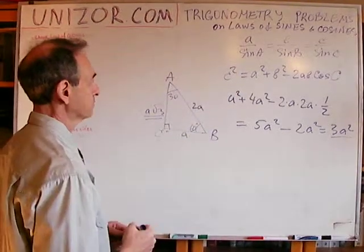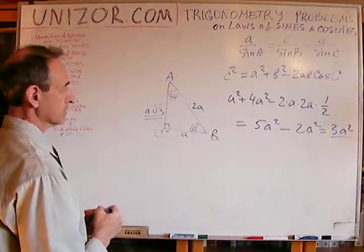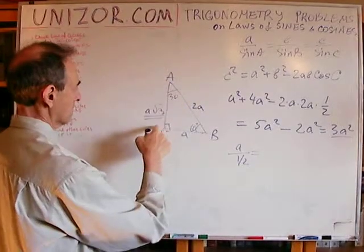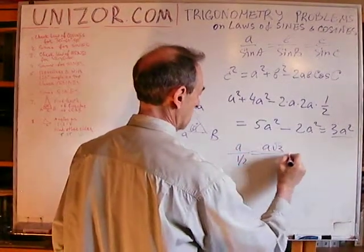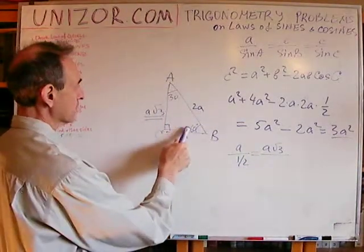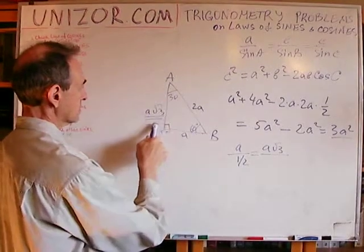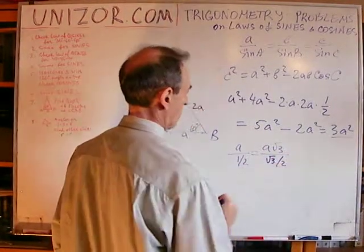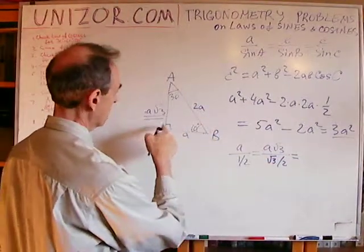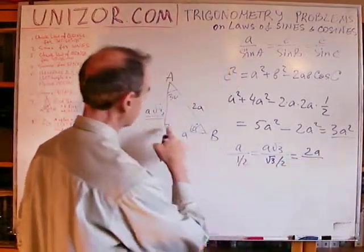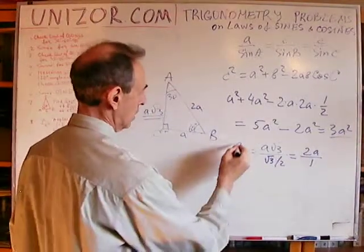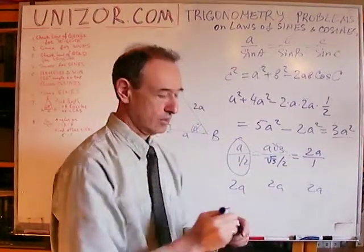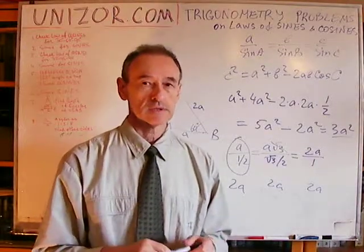Now let's check the law of sines: a/sin(30°) = a/(1/2); (a√3)/sin(60°) = (a√3)/(√3/2); and 2a/sin(90°) = 2a/1. The first equals 2a, the second equals 2a, and the third equals 2a. So the law of sines holds as well.